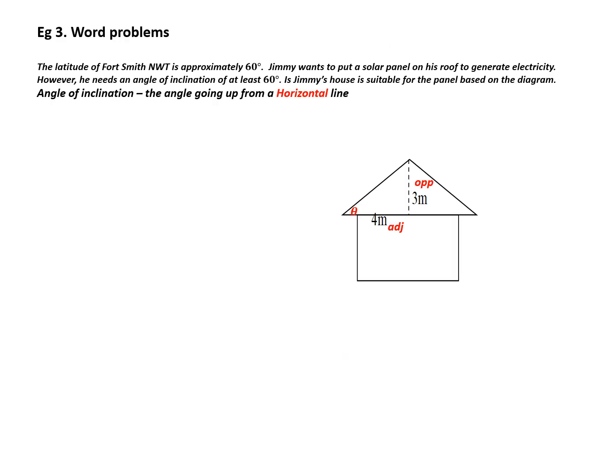Word problems. The latitude of Fort Smith Northwest Territory is approximately 60 degrees. Jimmy wants to put a solar panel on his roof to generate electricity. However, he needs an angle of inclination of at least 60 degrees. Is Jimmy's house suitable for the panel based on the diagram? One of the key words here is angle of inclination. The base word is incline, so that means going up from a horizontal line. So here's my picture. I now need to identify my parts. The angle of inclination is going up from horizontal. There's horizontal, there's the angle going up. 3 is across from theta, so that would be my opposite side. 4 is beside theta, so that would be my adjacent side.